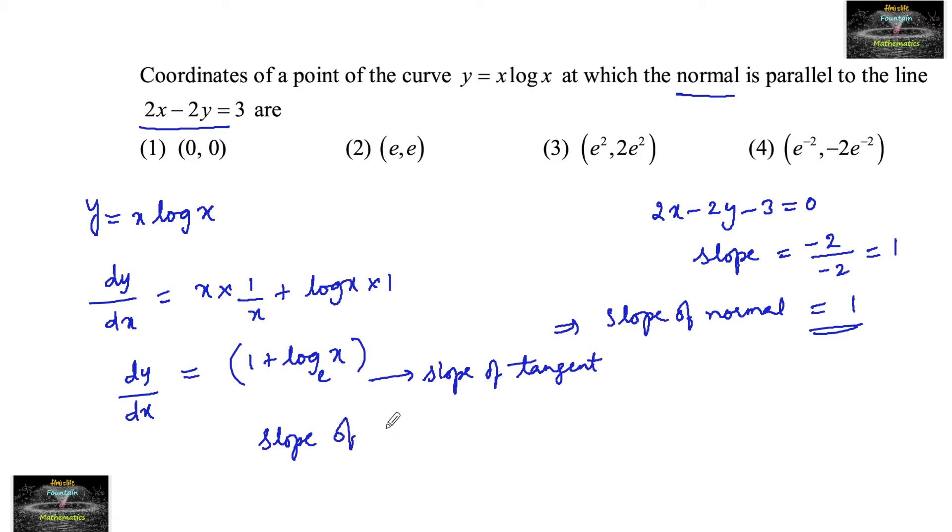So slope of normal equals minus 1 upon 1 plus log x. And we know that slope of normal is 1.